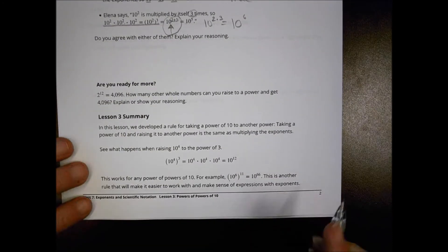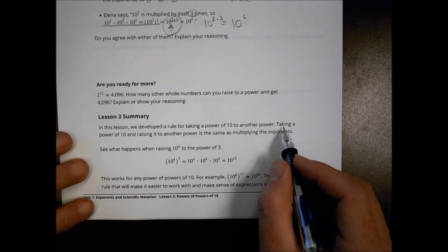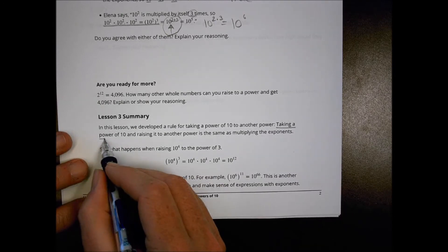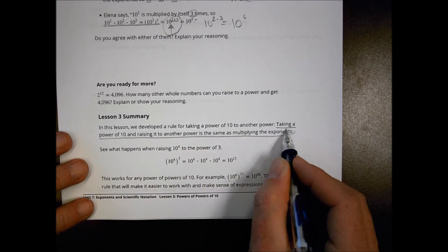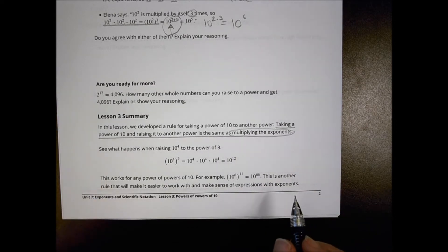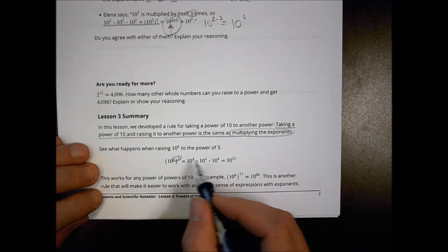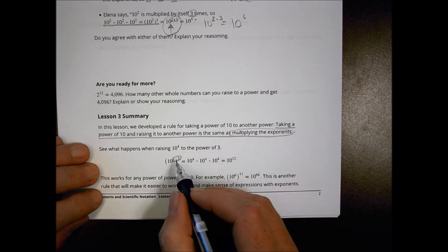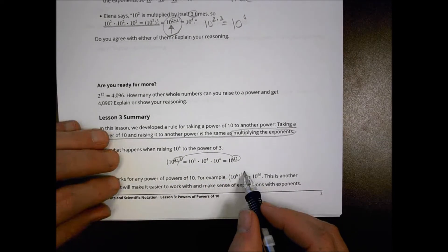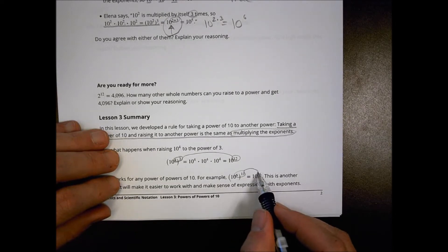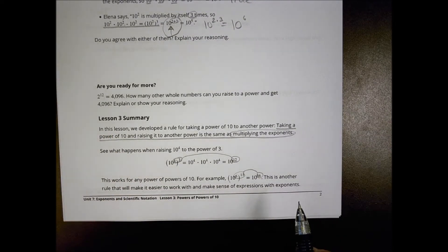So for today's lesson, basically what we're saying is that we can make another rule. Taking a power of 10 and raising it to another power is the same as multiplying the exponents. I have the four to the third power is like multiplying the exponents: four times three is 12. And here's another example, six times 11 is 66.